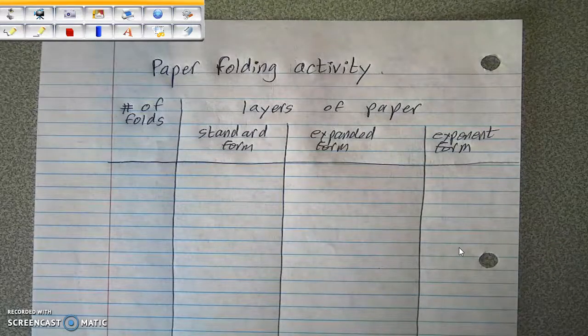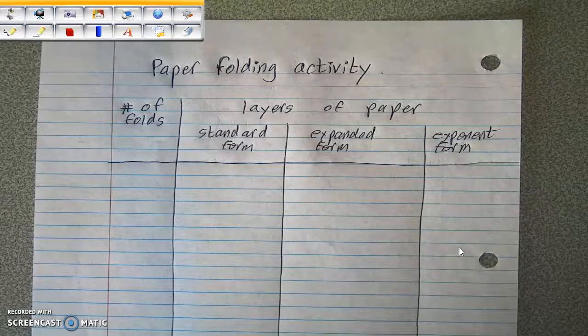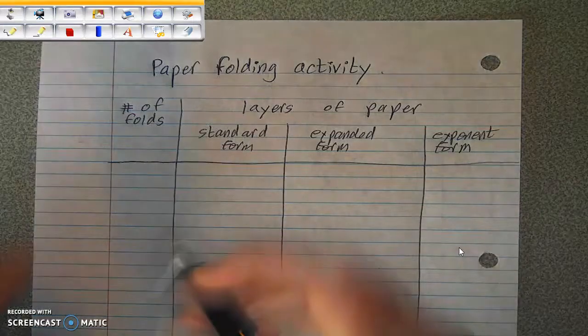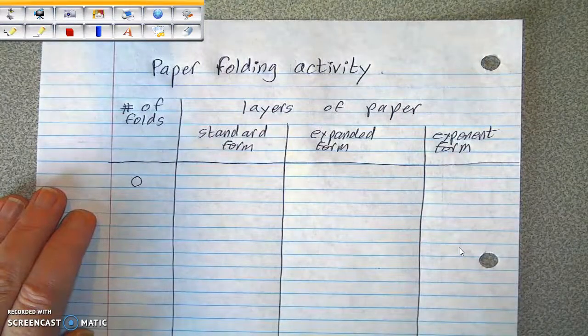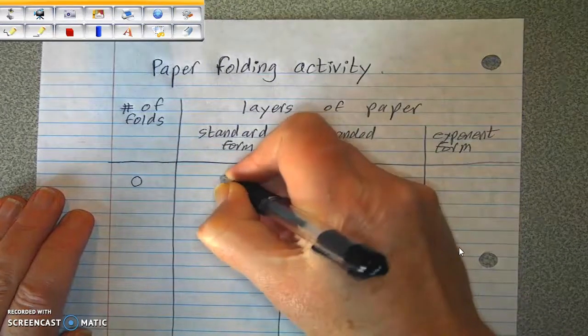And we are going to fold that piece of paper. But we're going to start off with zero folds. When you have zero folds, you have one layer of paper.